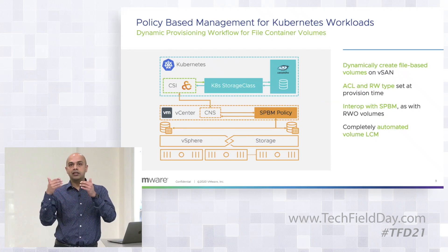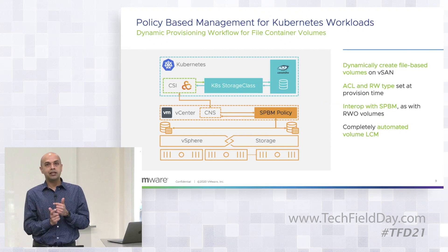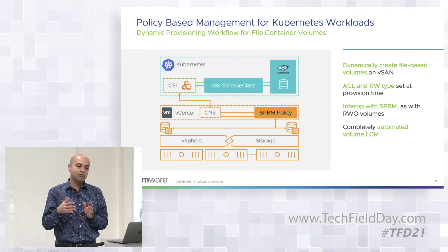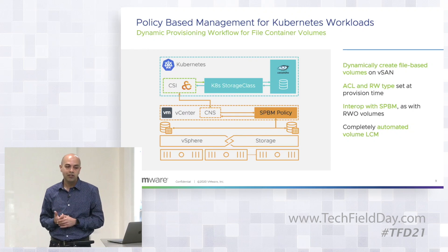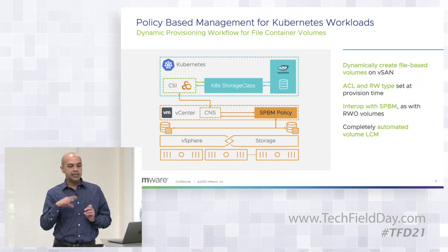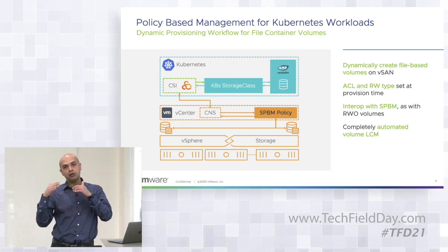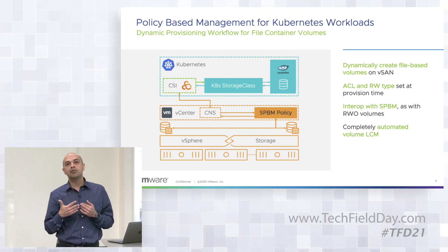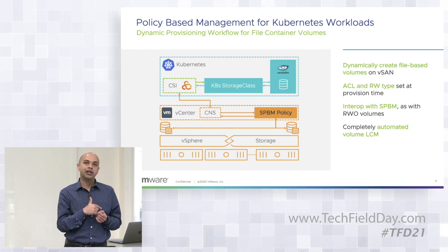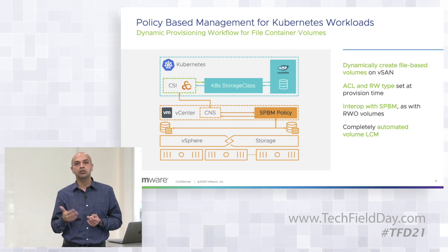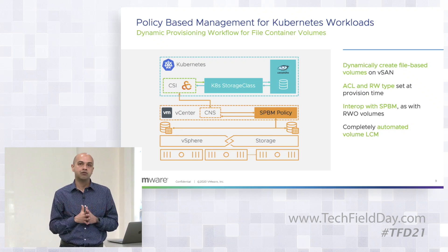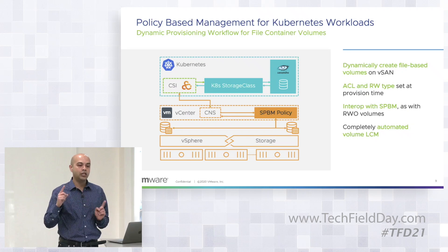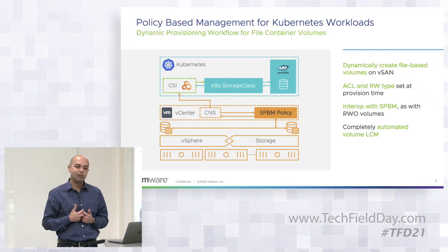Let's say an application like Cassandra wants to use that storage class and get a read-write-many persistent volume. It uses that storage class, and when it asks for a provisioning operation, Kubernetes talks to the vSphere CSI driver, which then talks to our CNS plugin running in vCenter to provision that volume on behalf of the application. CNS looks into the SPBM policy, uses SPBM to create a file share on vSAN with the required attributes, mounts that file share to the worker VM where the pod is running, and then the application is given a persistent volume mapped to that file share to share data between its different instances or pods. That is the end-to-end workflow for dynamic provisioning.